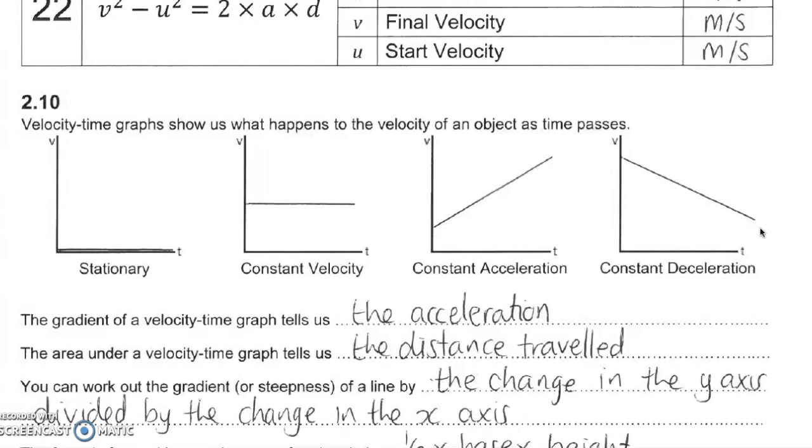There's two things we can work out in a velocity time graph. One is the acceleration. And the acceleration can be found by the gradient of a line. So again, same principle, it's going to be rise over run. So whatever this value is here, minus this value here, that's going to be your length in the y-axis, divided by your x-axis length in time, that will give you your acceleration.